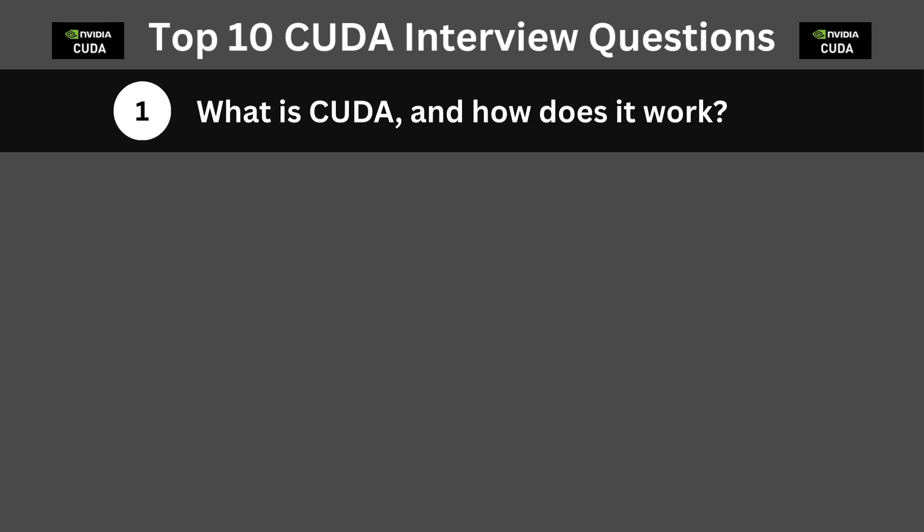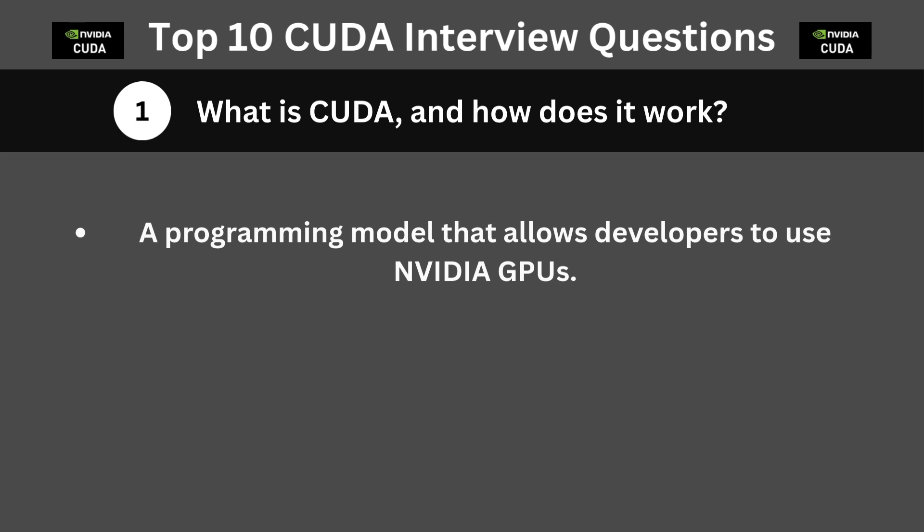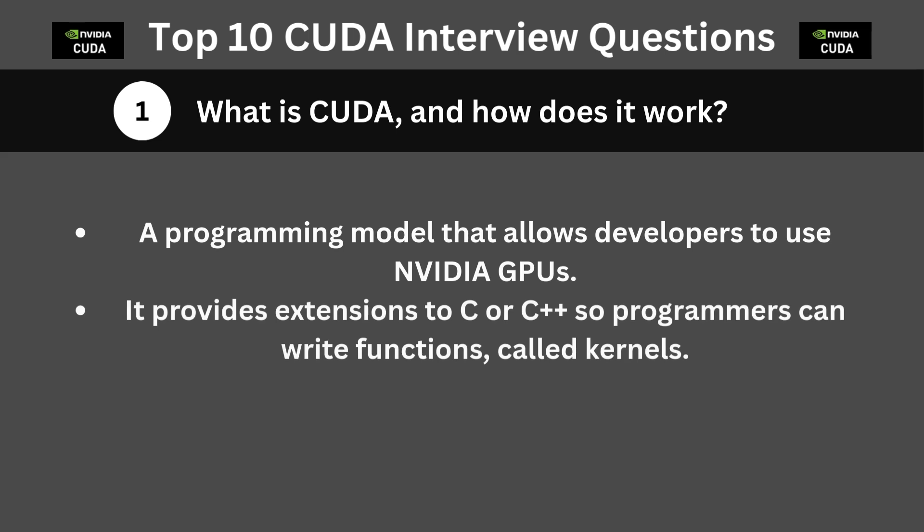Our first question is: what is CUDA, and how does it work? CUDA is NVIDIA's parallel computing platform and programming model that allows developers to use NVIDIA GPUs for general-purpose processing. It provides extensions to C or C++, so programmers can write functions called kernels that run on the GPU in parallel across many threads.